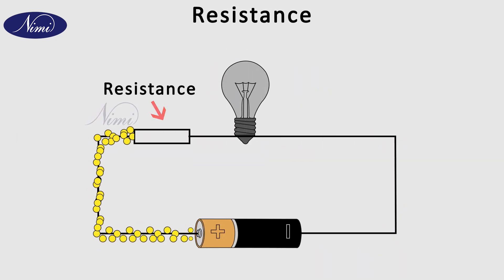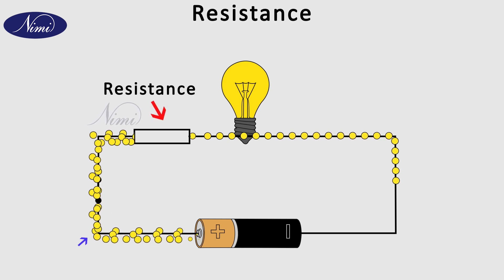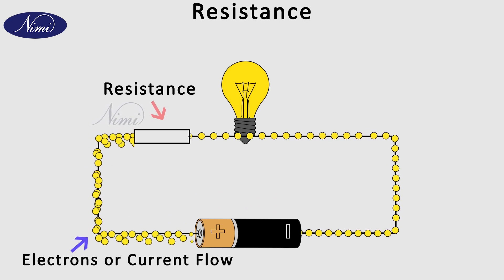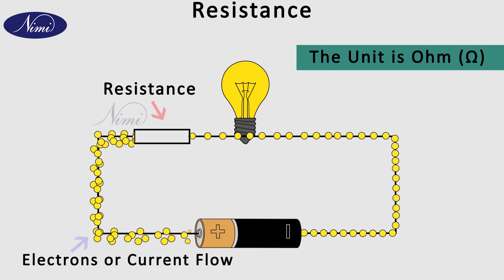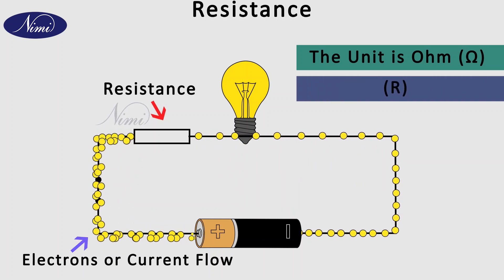Then what is resistance? Resistance is a property of conductor which opposes flow of electrons or current. The unit of resistance is ohm and it is denoted by a letter R.